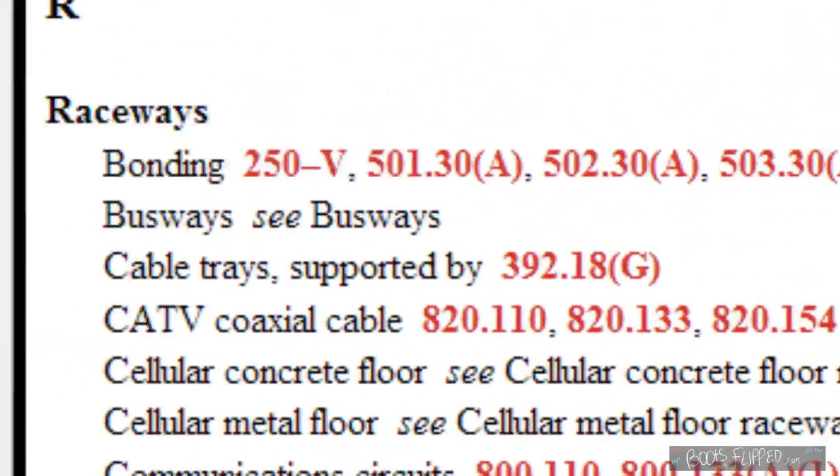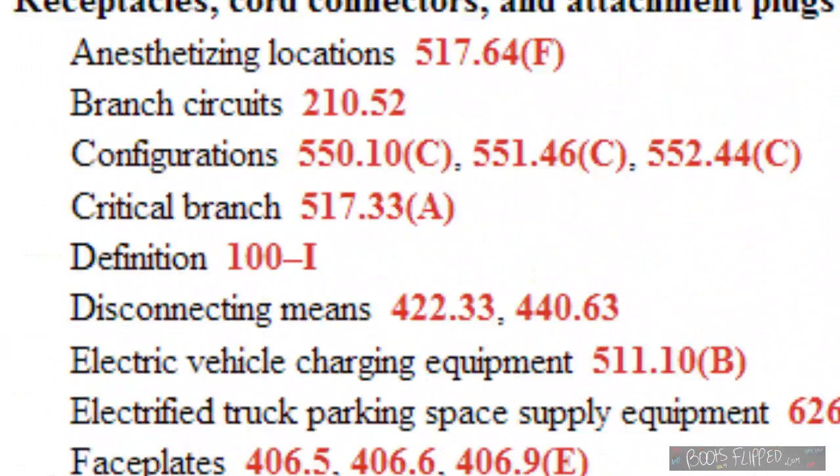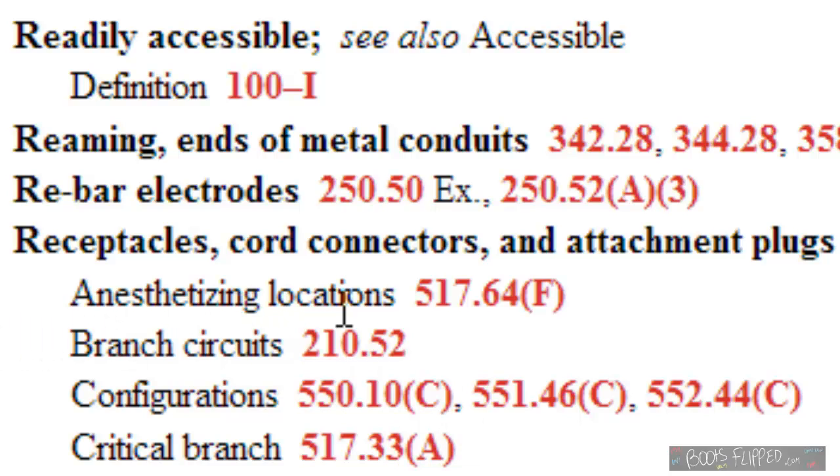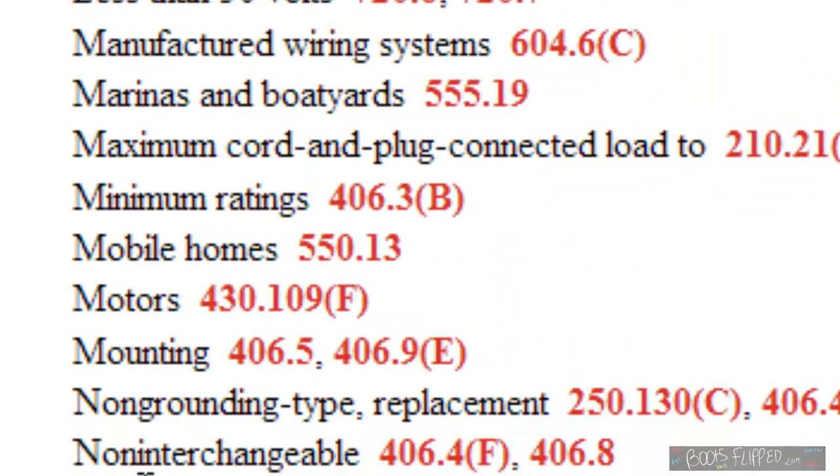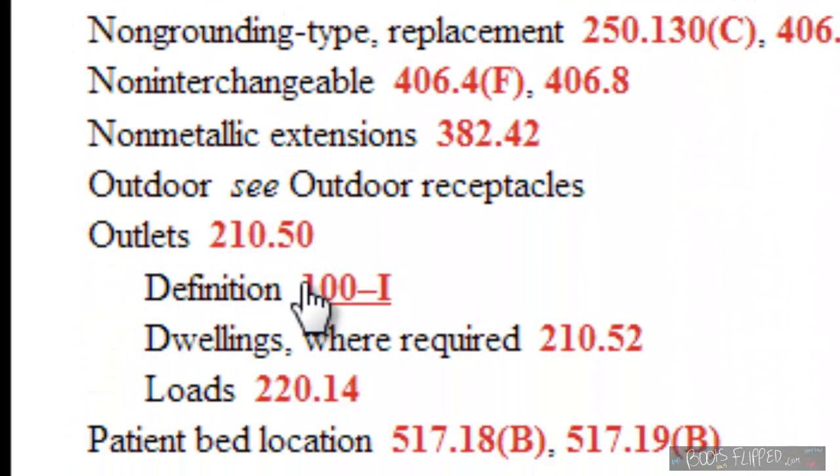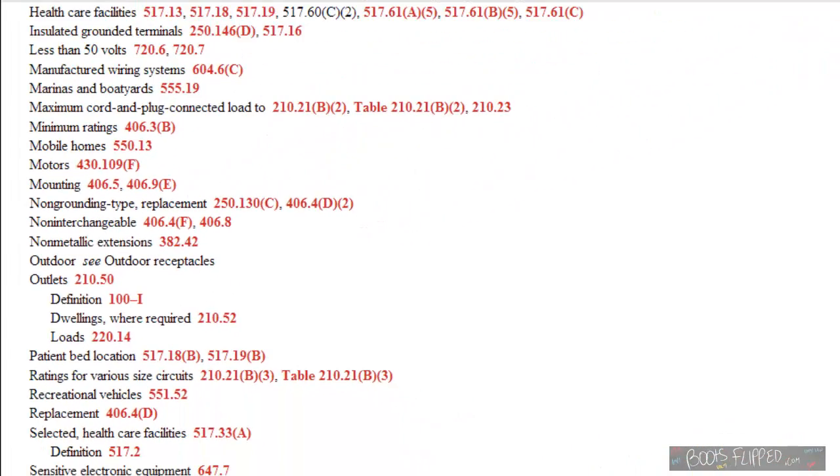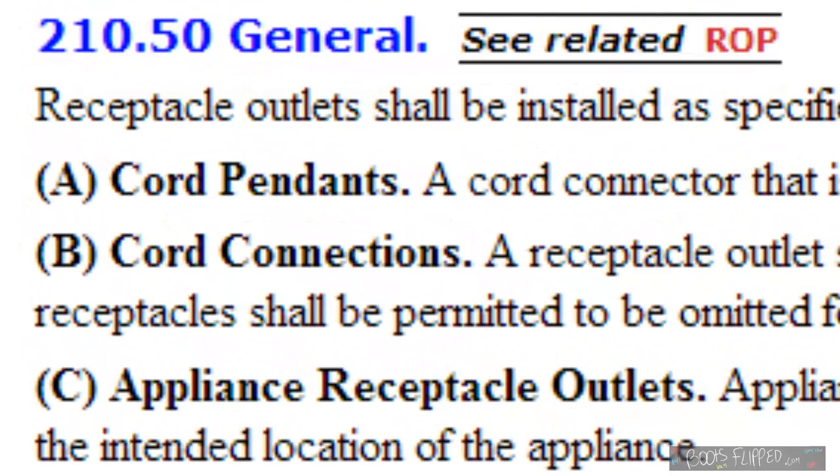So let's try receptacles. Let's go to R. And there's receptacles. Let's see appliances. Nothing there. Oh, right here, outlets. Look at that, 210.50. Let's try that. Okay, right there, 210.50. Now, it doesn't give a C like the appliance requirement did inside of outlets, but it did at least get us close so we could find it if we were looking for it in a hurry in a code question or a code test scenario. So there are two ways that you could find that receptacle.